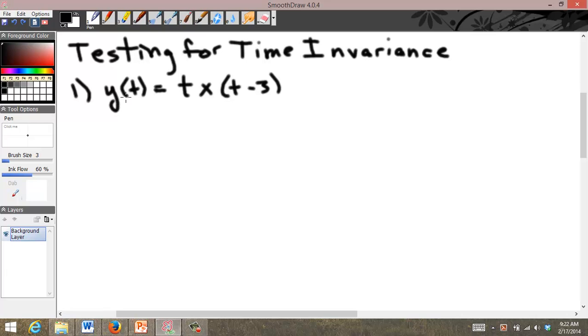The first one is y of t is equal to t times x of t minus 3. To test for time invariance, we first let an input x1 of t equal x of t minus some number t0. Remember, this happens before you put it into the system.